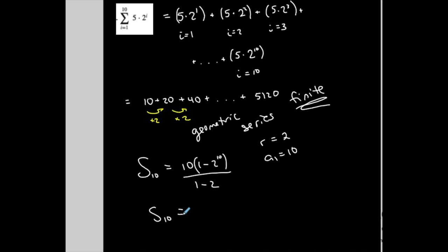And then simplify. So again, I'm going to do 2 to the 10th first, or 1 minus 2 to the 10th, multiply that by 10, then divide by negative 1, I get 10,230.